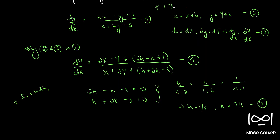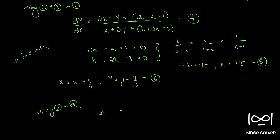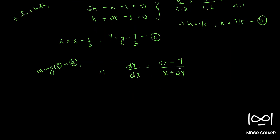From equation 2, capital X equals x minus h and capital Y equals y minus k. With h and k known, we can write X equals x minus 1 by 5 and Y equals y minus 7 by 5. Call this equation 6 — we will use it later. Now substituting equation 5 into equation 4, dY by dX equals 2X minus Y divided by X plus 2Y. Call this equation 7, which is now a homogeneous equation.